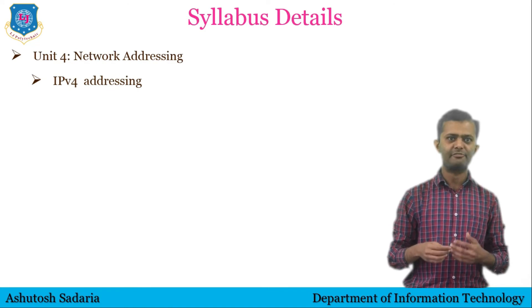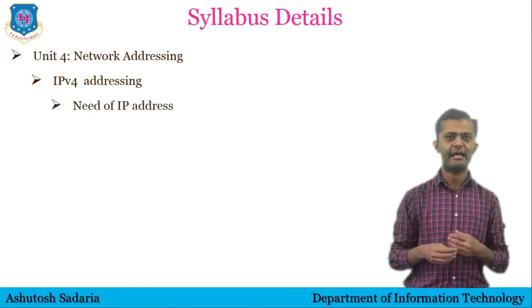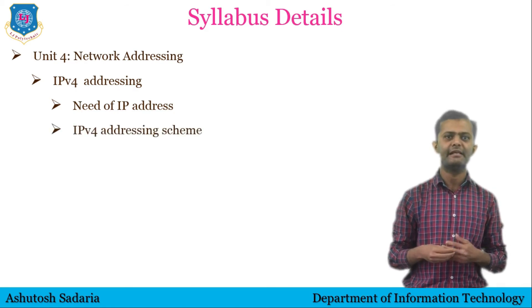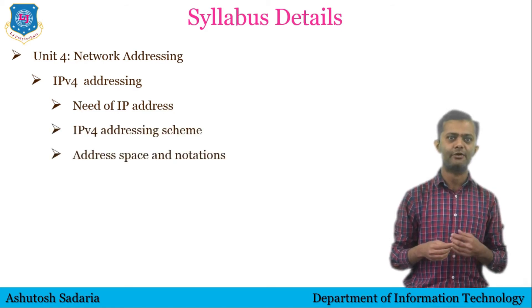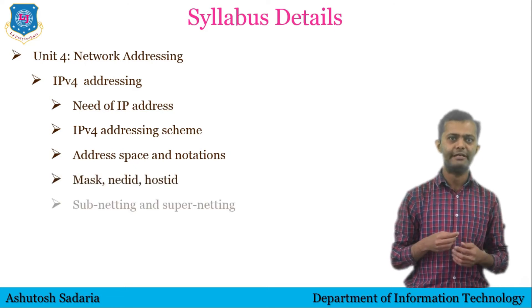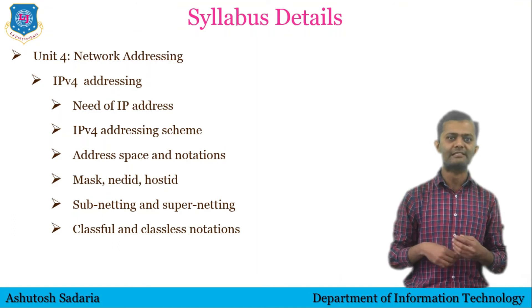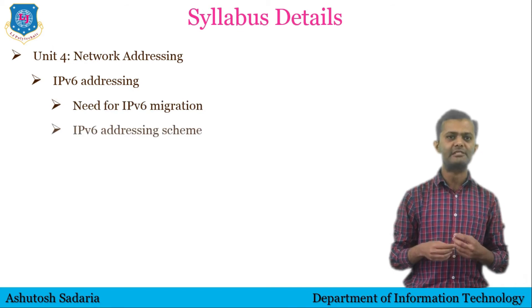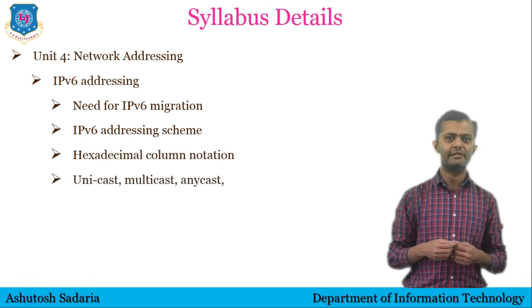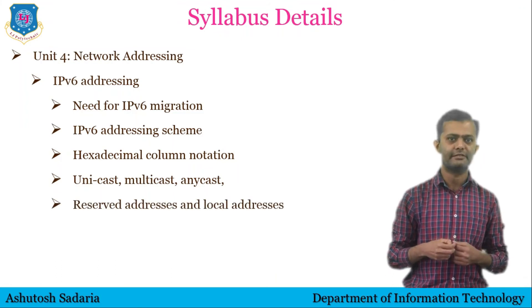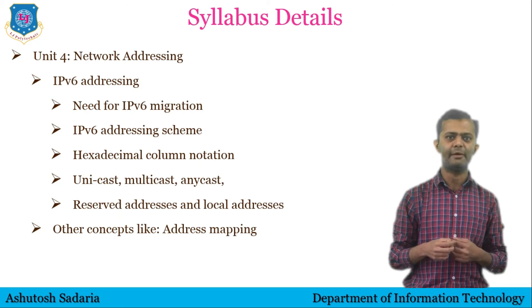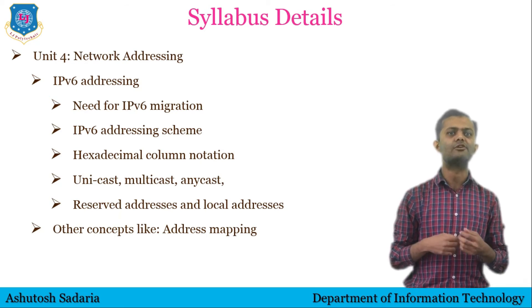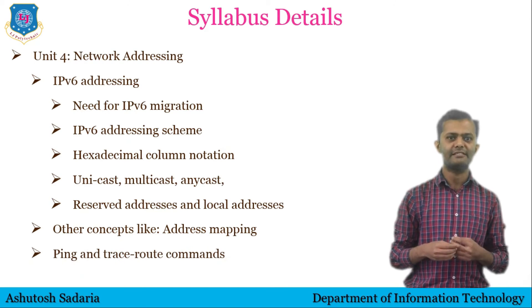In the fourth unit, we will see Network Addressing. The first part is IPv4 addressing, covering the need of IP address, IPv4 addressing scheme, address space and notations, mask, net ID, host ID, subnetting, supernetting and classful and classless notations. In IPv6 addressing, we will see the need for IPv6, migration from IPv4, IPv6 addressing scheme, hexadecimal colon notation, unicast address, multicast address, anycast address, reserved address and local addresses. We will also see address mapping from logical to physical and physical to logical, and ping and traceroute commands.